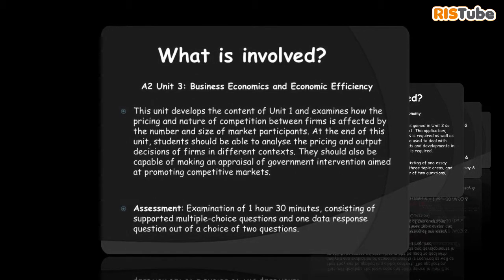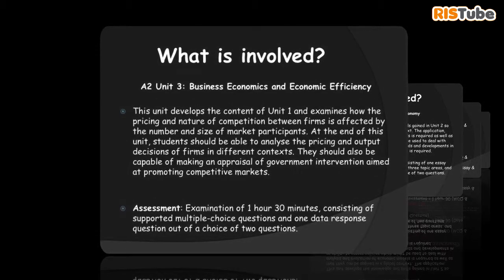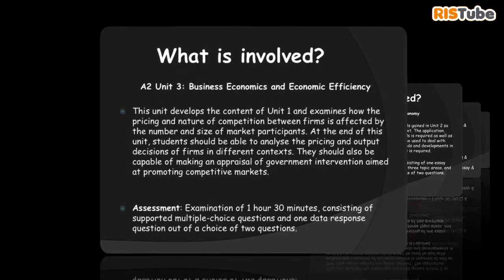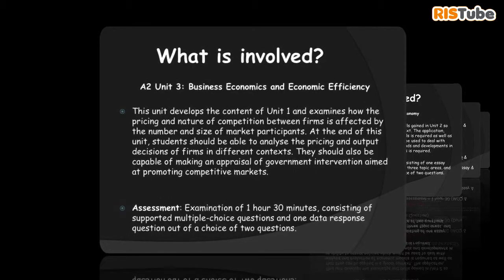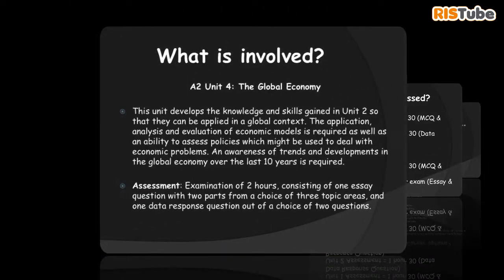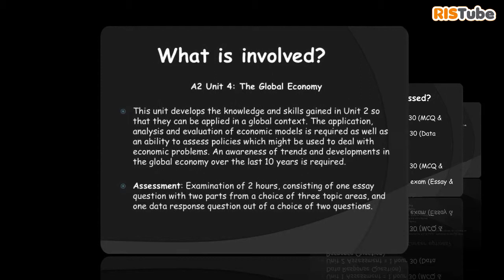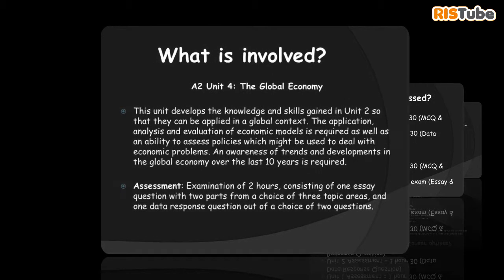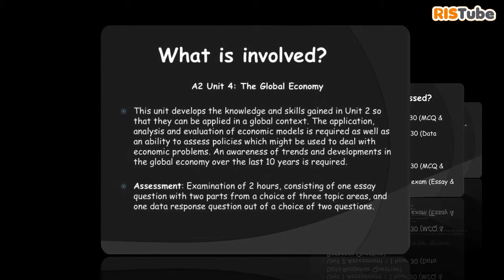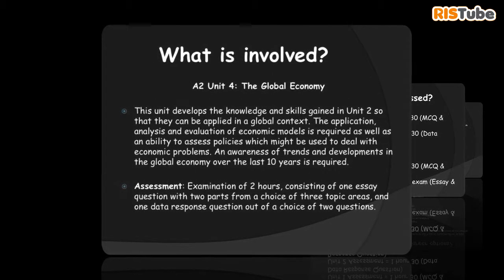What is involved? AS Unit 1 – Competitive Markets: How They Work and Why They Fail. The exam is 1 hour and 30 minutes, consisting of supported multiple choice questions and one data response question out of a choice of two questions.